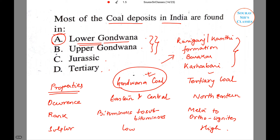So we are sure that Gondwana coal is the answer. And among options A and B, the answer is A — lower Gondwana — as it has most of the coal deposits in India. So option A is the correct answer. I hope this short tutorial on geology was helpful.